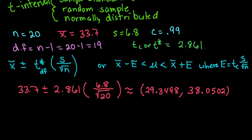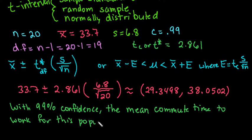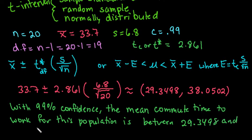As always, it's important to make sure you know how to interpret this. We would say with 99% confidence, whatever level of confidence you are using is how you start, we can say the mean commute time to work for this population is between 29.3498 and 38.0502 minutes.